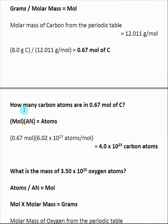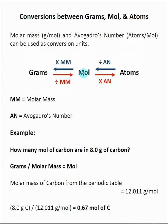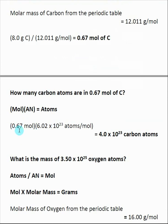So then I say, how many carbon atoms are in that 0.67 mole of carbon? So here I have moles, I want to go to atoms, that means I need to multiply by Avogadro's number. So I take my 0.67 mole, multiply by Avogadro's number, that tells me I have 4.0 times 10 to the 23rd carbon atoms.